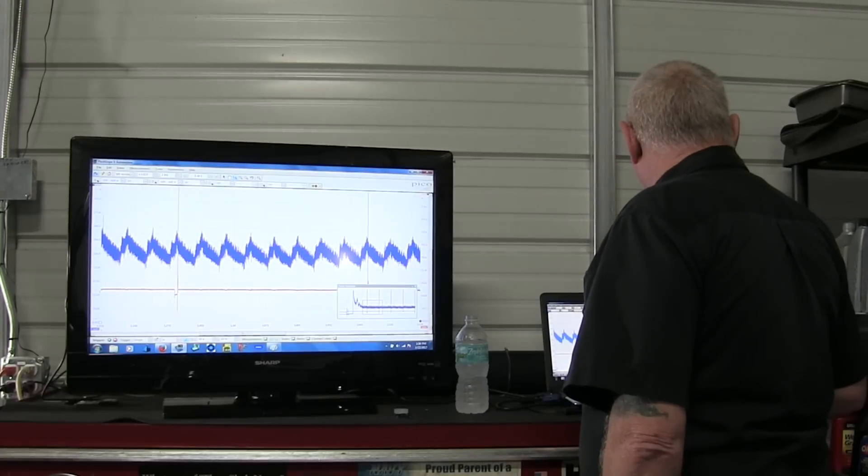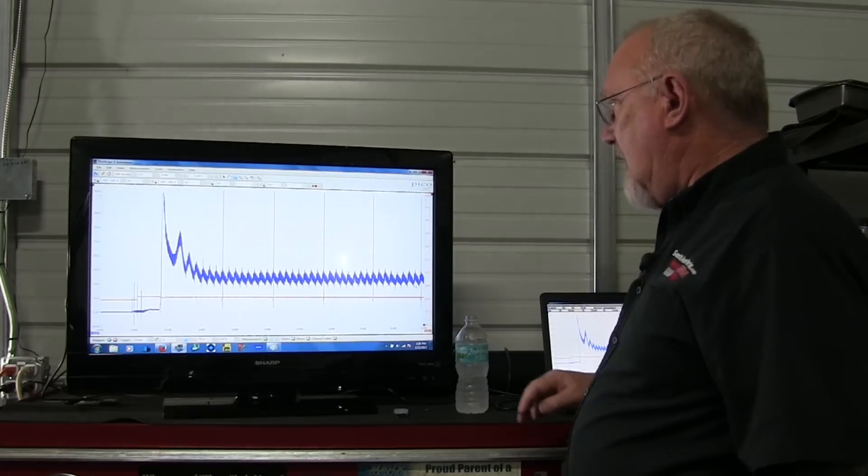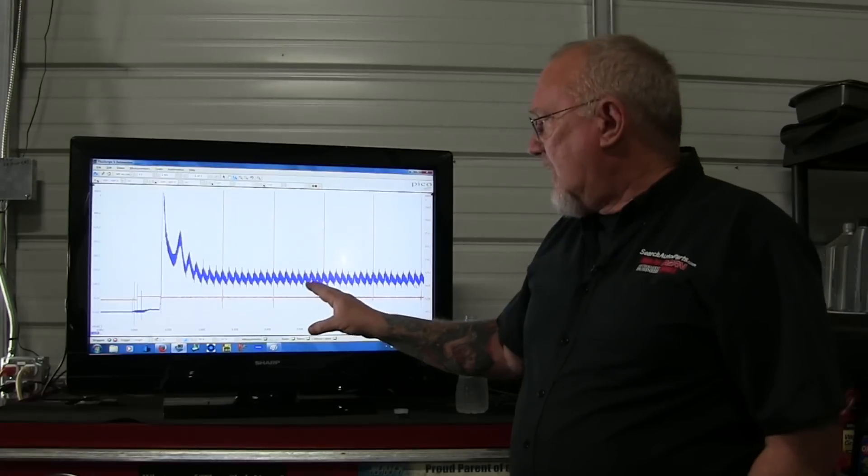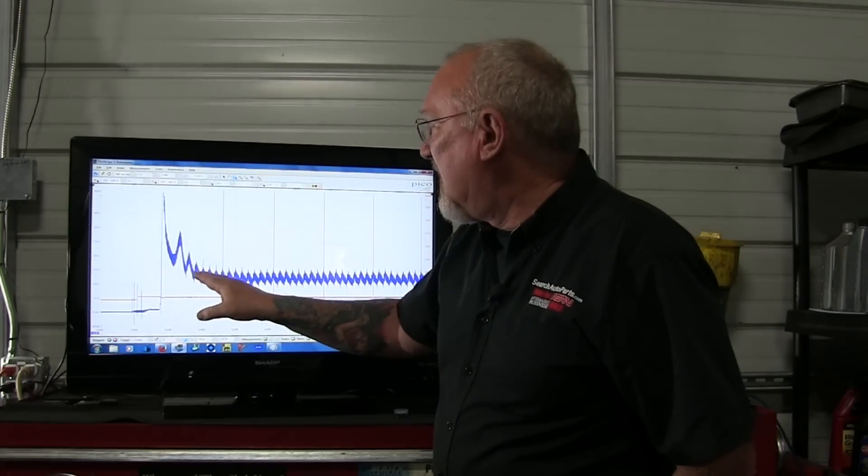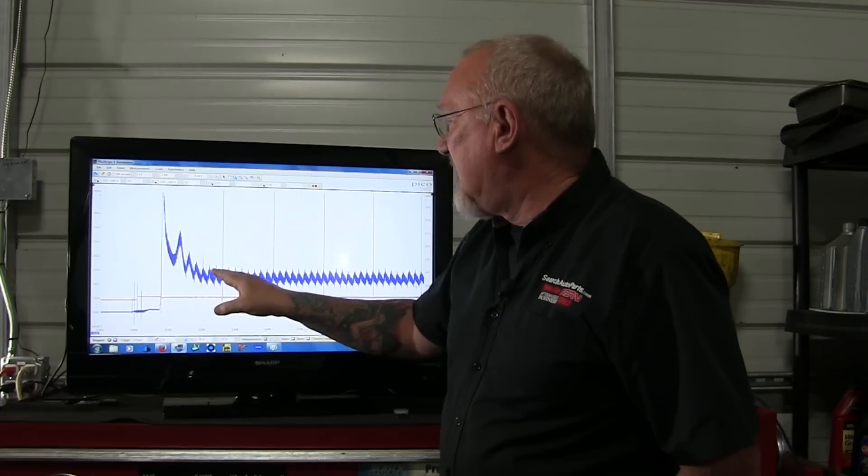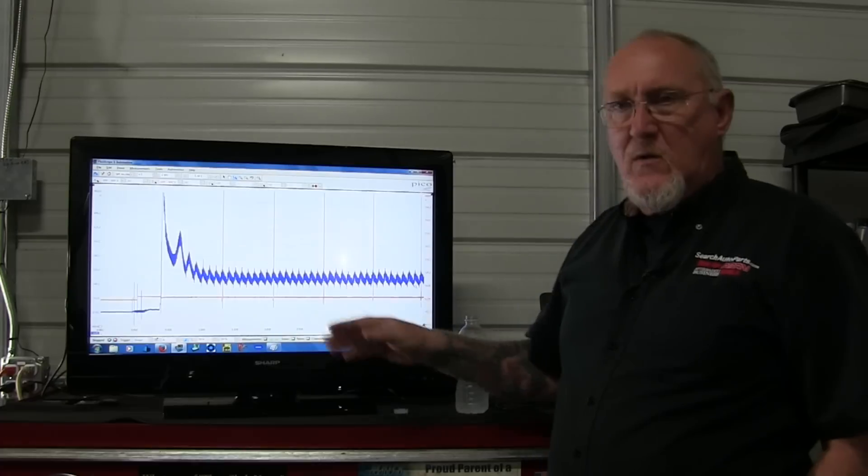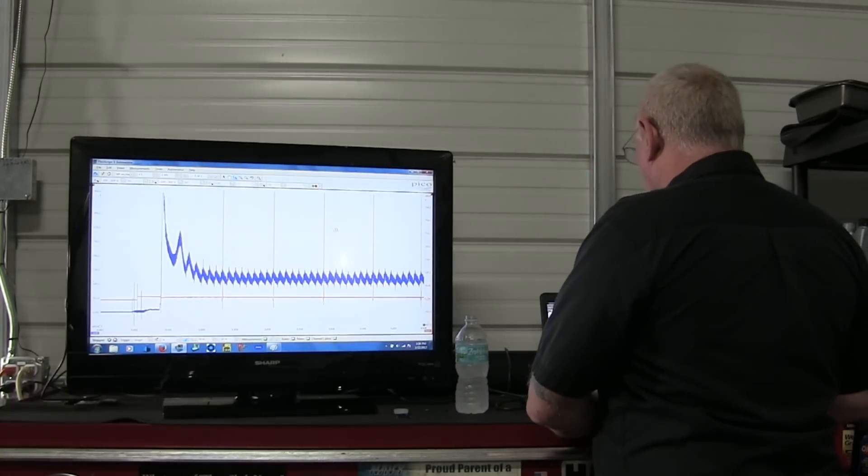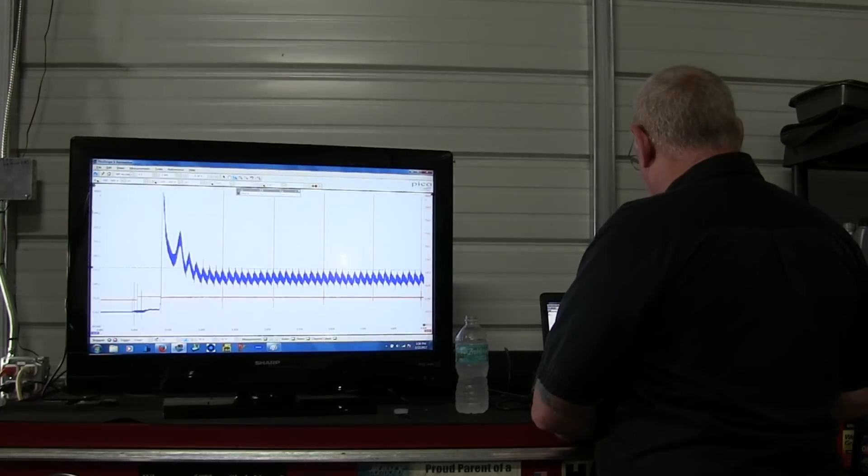Now, the other thing I wanted to point out on the relative compression—again, we talked about before—all of these peaks are uniform, and they're all occurring roughly 160 to 170 amps. And if you look at the height, that can be a clue as to the overall health of the engine as well. So we can take some cursors down and get a measurement on that height, just take one along the top, one along the bottom.